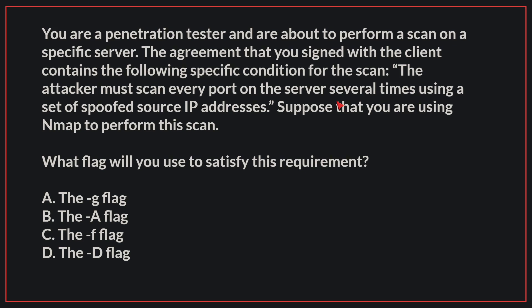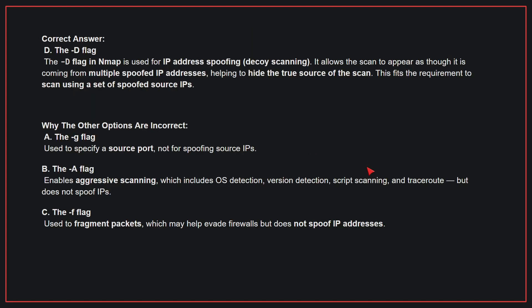The correct answer is D: the -D flag. The -D flag in NMAP is used for IP address spoofing. It allows the scan to appear as though it is coming from multiple spoofed IP addresses, helping to hide the true source of the scan. This fits the requirement to scan using a set of spoofed source IPs.